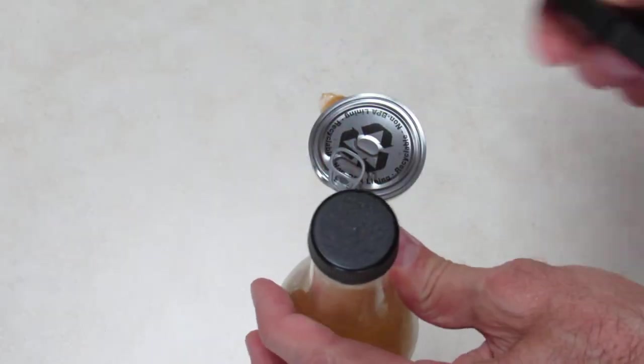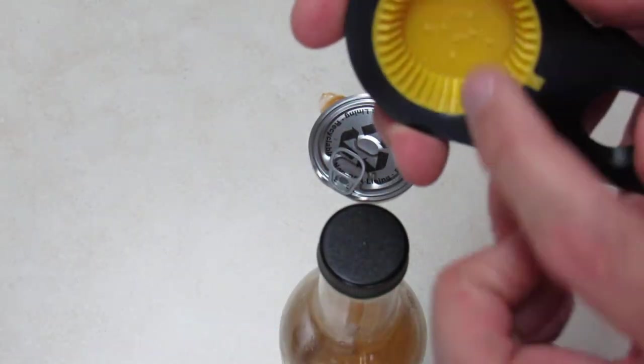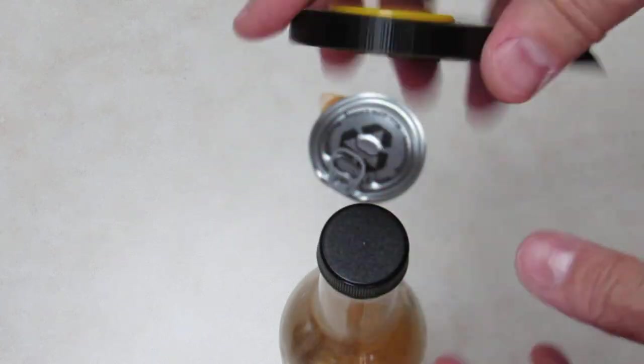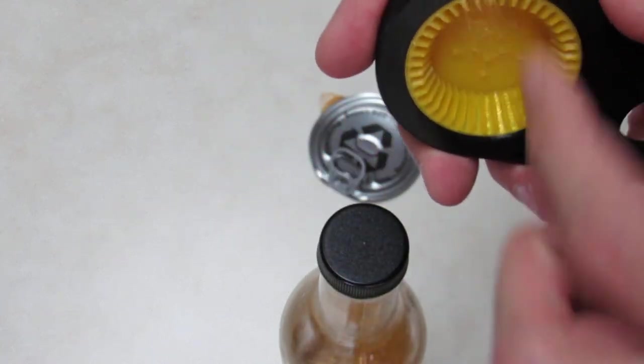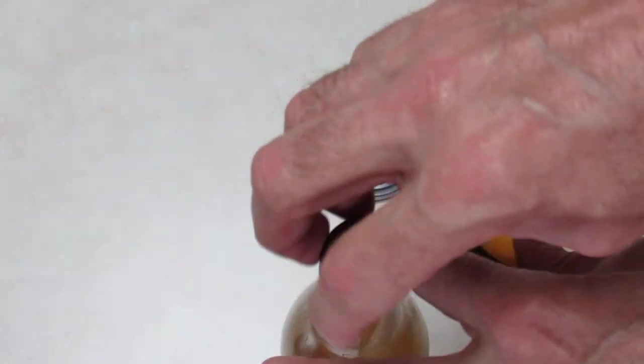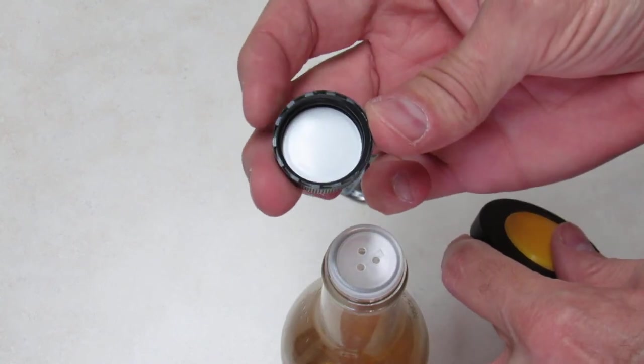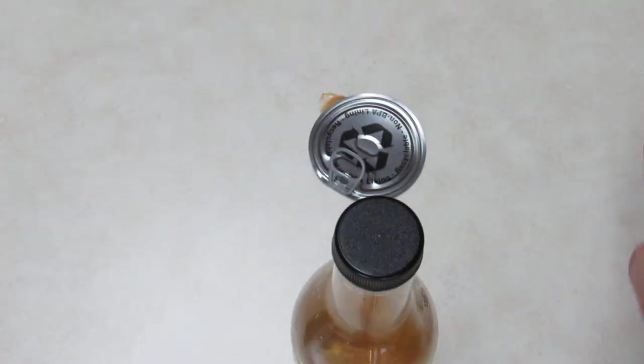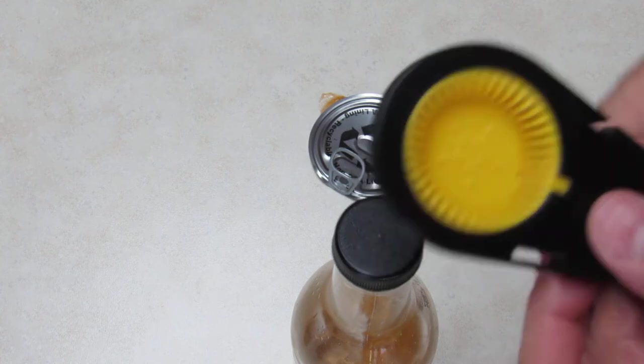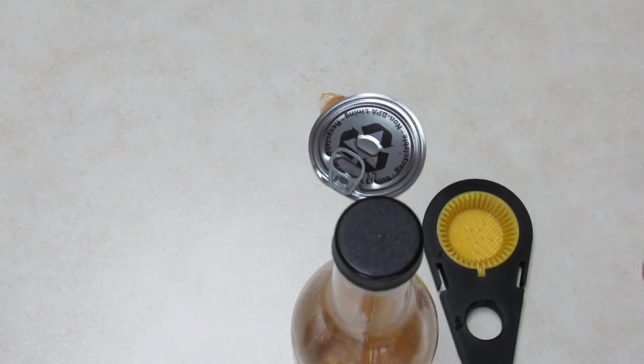Here's another bottle. Different size. This has a cone shape inside so it'll accommodate several different sizes of bottle cap. Push down, turn. Lefty loosey, righty tighty. And off it comes. That simple. Good luck.